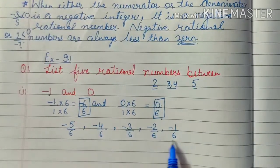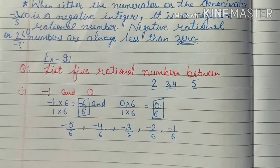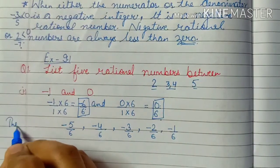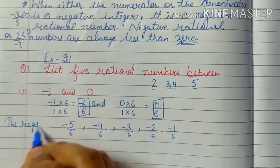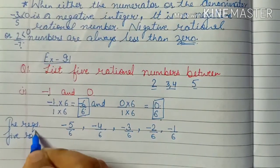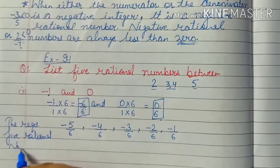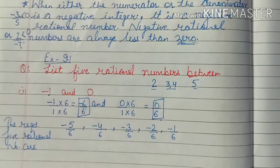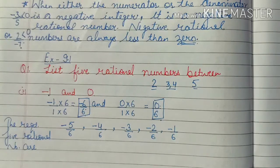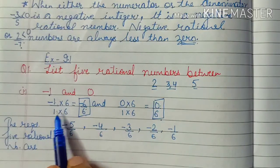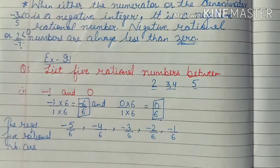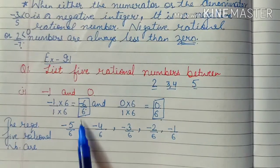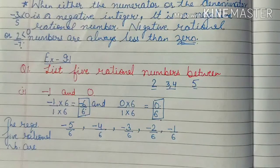So these 5 numbers — minus 5 by 6, minus 4 by 6, minus 3 by 6, minus 2 by 6, and minus 1 by 6 — are the required 5 rational numbers between minus 1 and 0. I mentioned that we can write uncountable numbers between any two rational numbers. If we multiply by 10, 100, or 200 instead, we can write even more rational numbers between them.